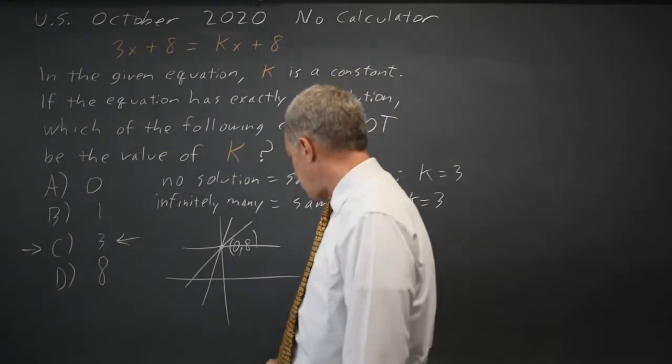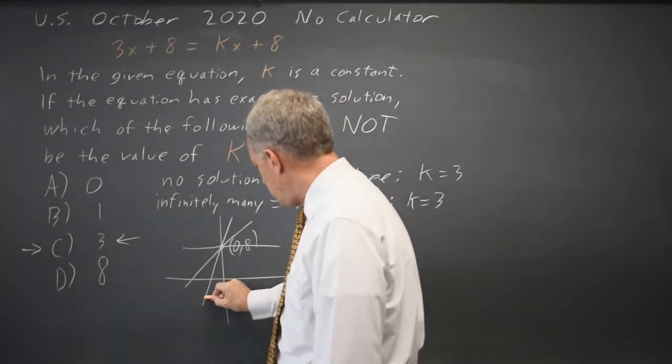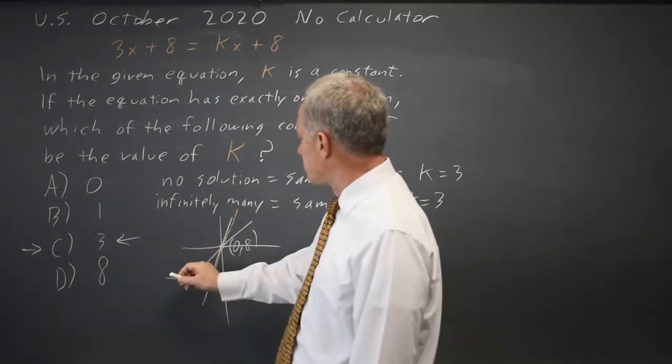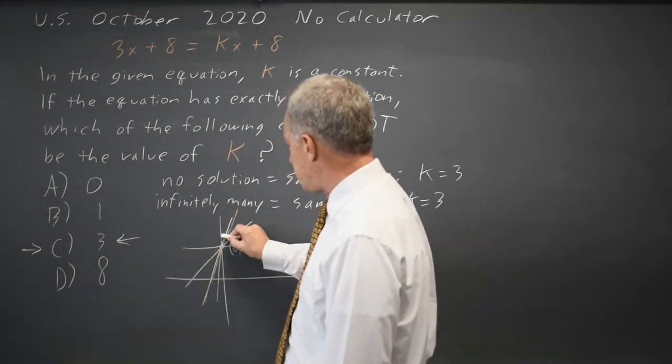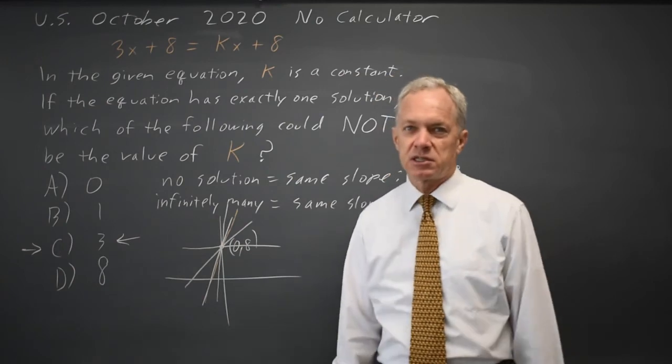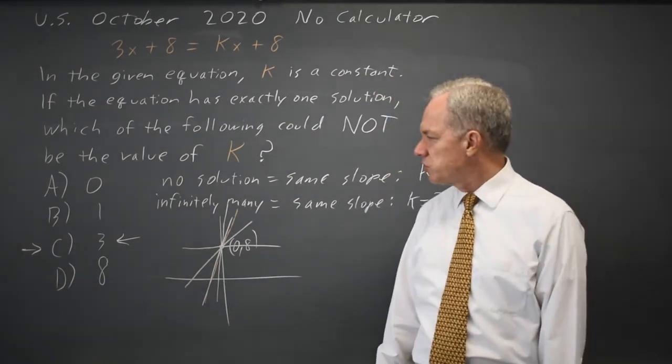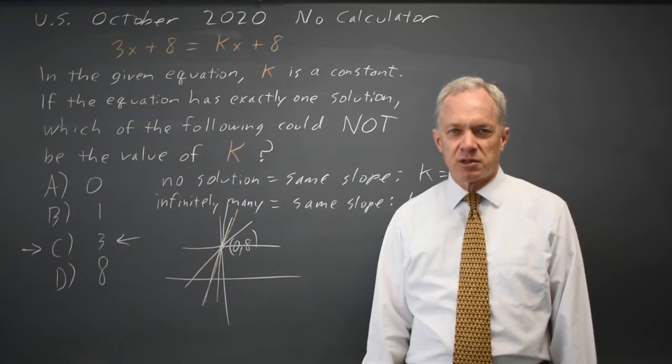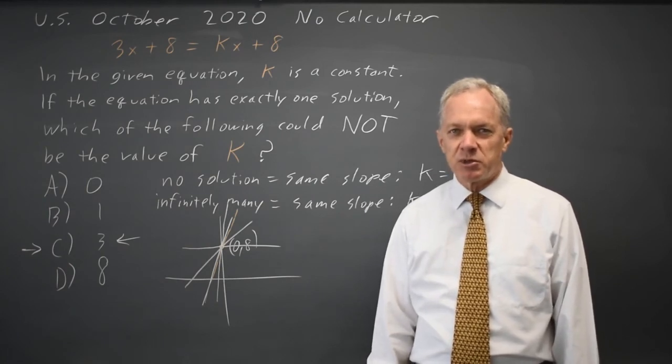And intersects at every point. And 8x plus 8 is a very steep line that intersects at the y-intercept. So all three choices other than choice C intersect at exactly one point, the y-intercept. So choice C would be the answer.